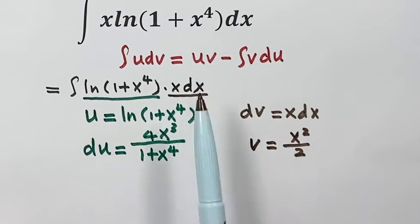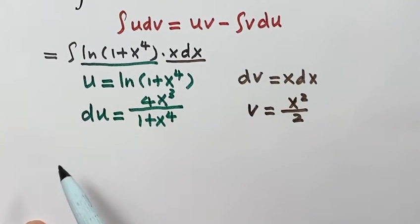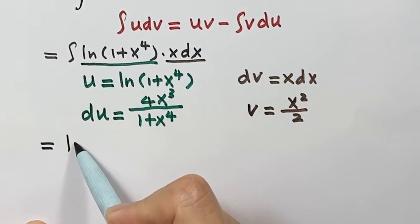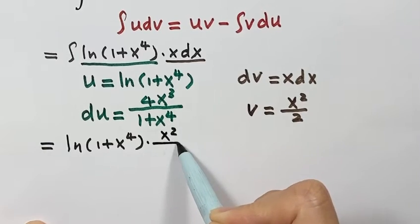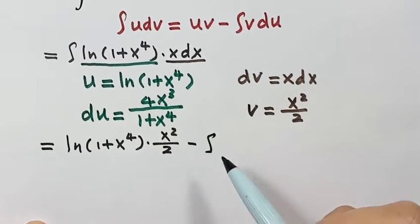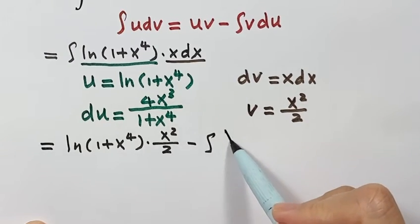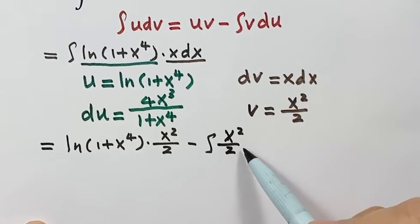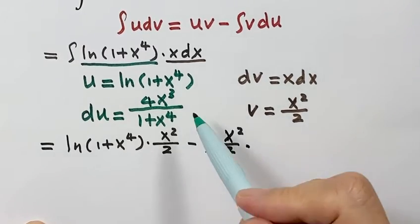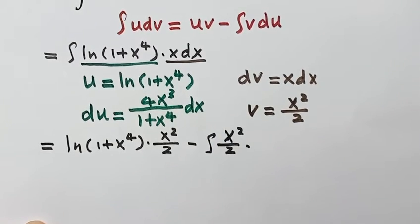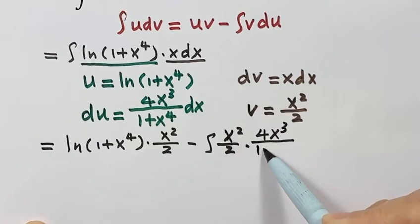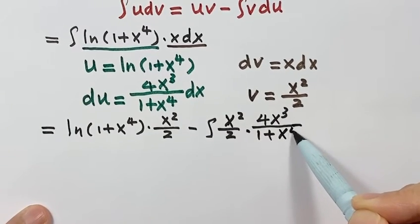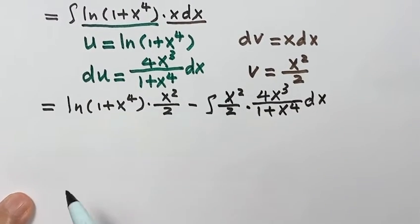Now we use the formula. Plugging in, u times v gives natural log of 1 plus x to the fourth, times x squared divided by 2. Then minus the integral of v du, so that is x squared over 2, times 4x to the third over 1 plus x to the fourth, dx.